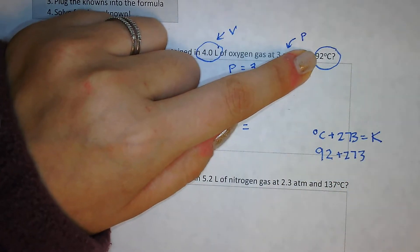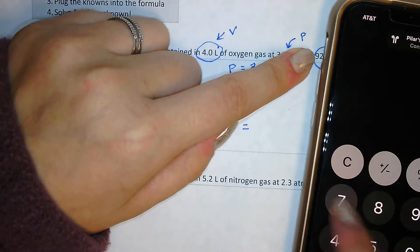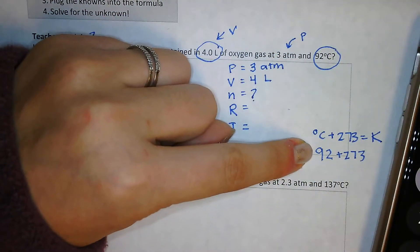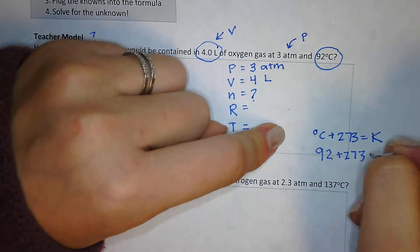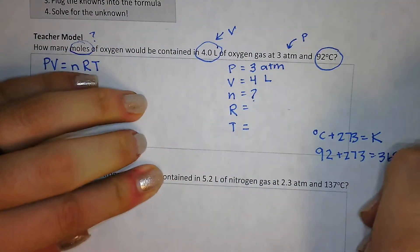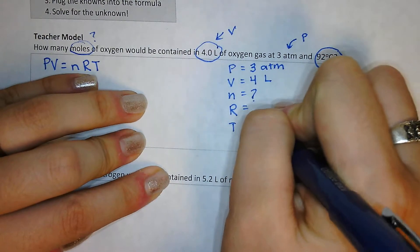I'm going to take a calculator. 273 plus 92. And that is 365. So I have 365 Kelvin.